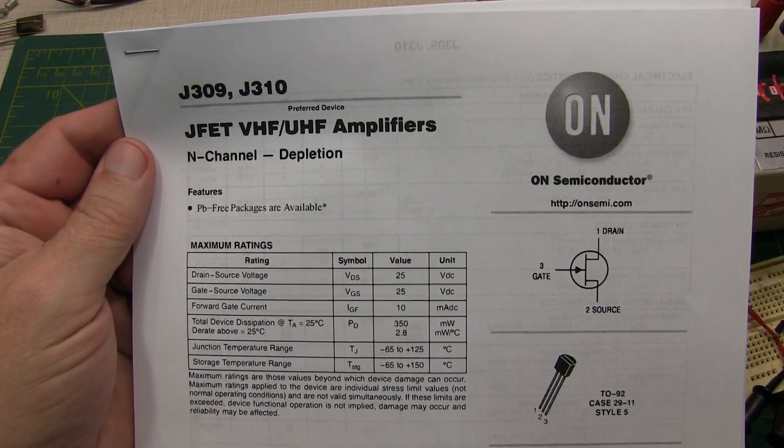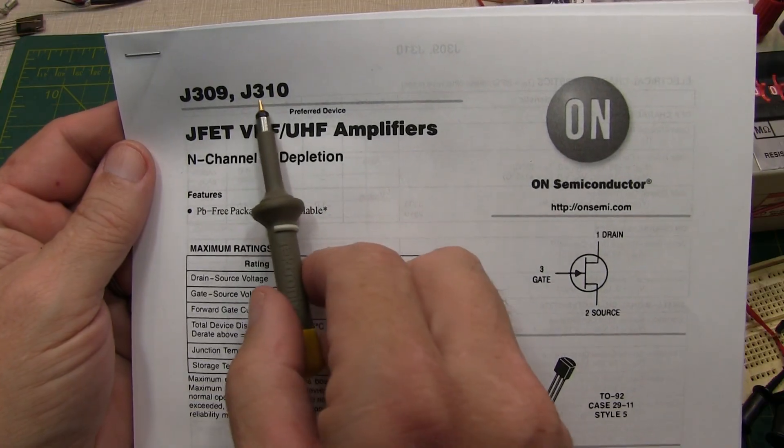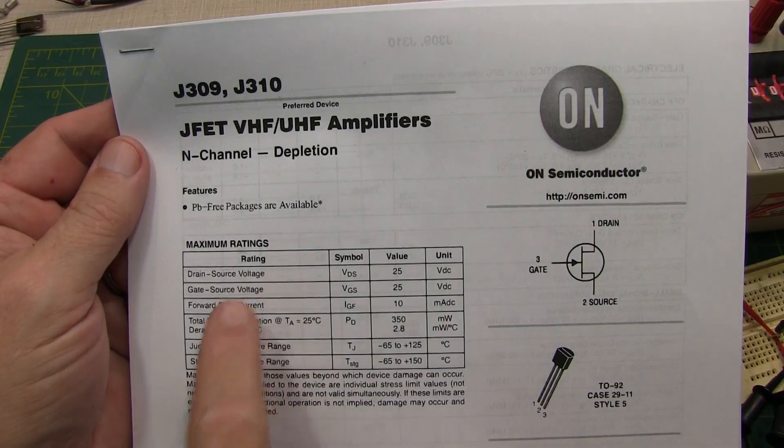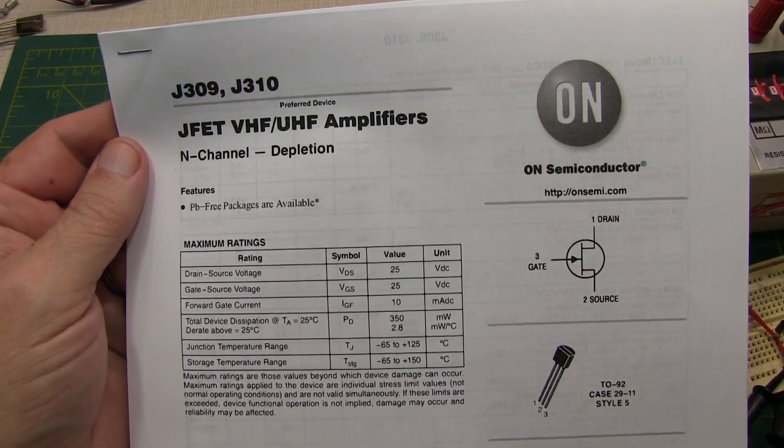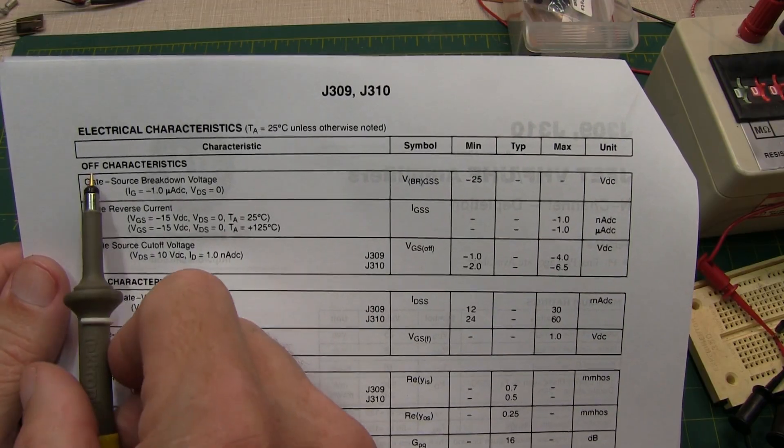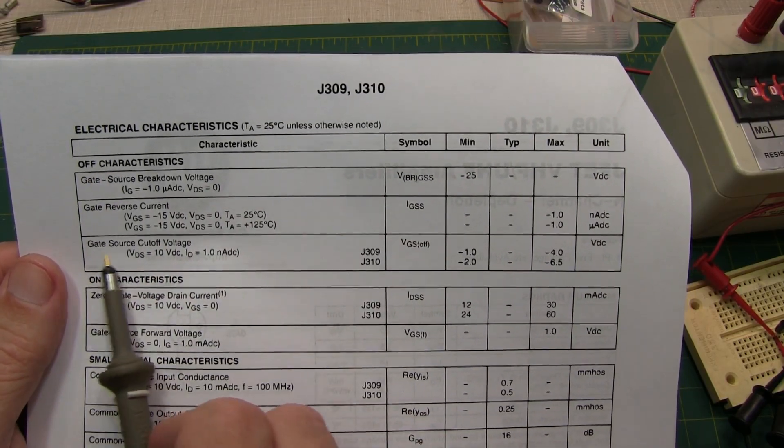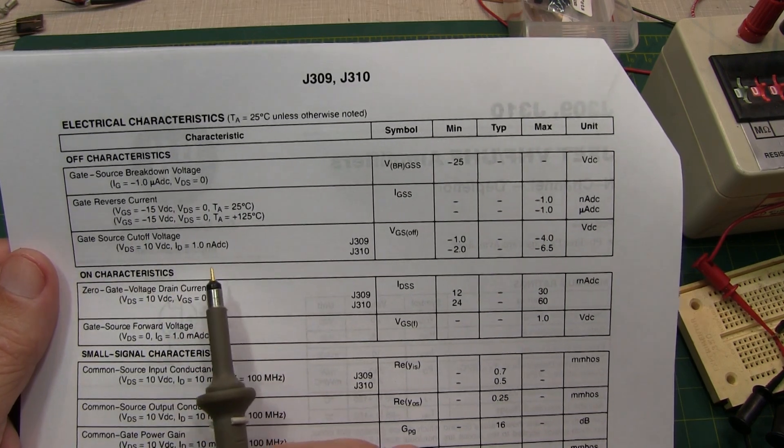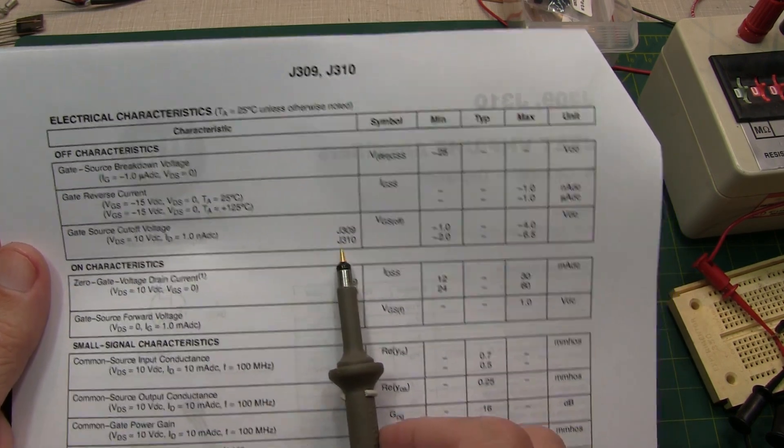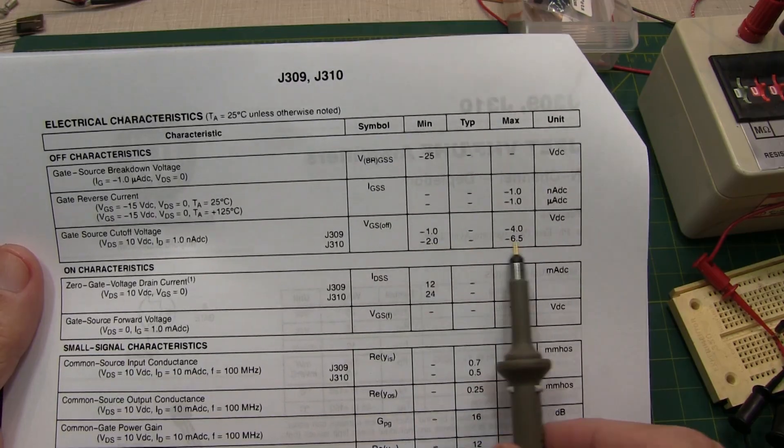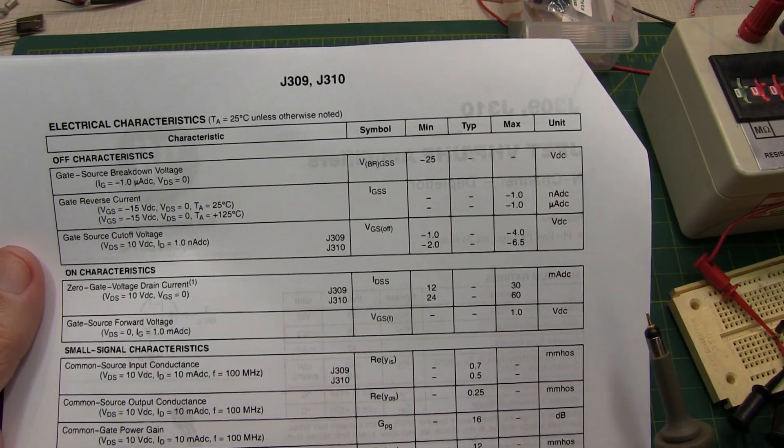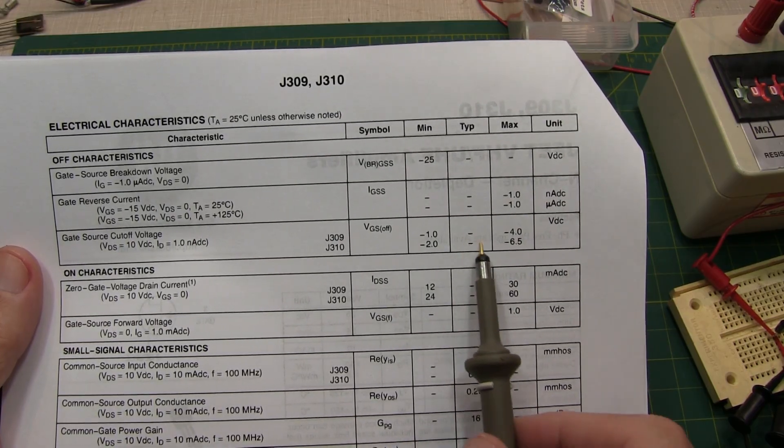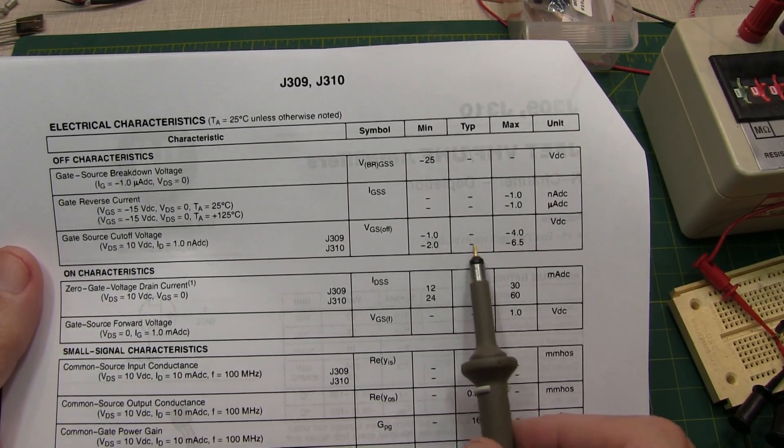Now the JFET I happen to be using in these experiments is the J310, just simply because I have a bag of them here. Let's take a quick look at some of the specs to confirm what we saw on the curve tracer. First looking at the off characteristics, the gate source cutoff voltage with a VDS of 10 volts, it says for a J310 it's going to be between minus 2 and minus 6.5, and the curve tracer told us for this particular device was at minus 4.5, which is almost right in the middle there.